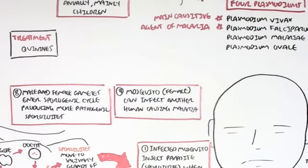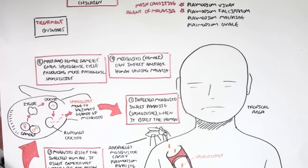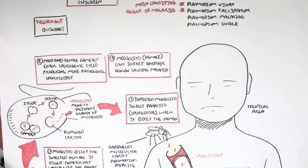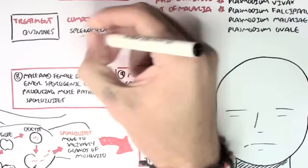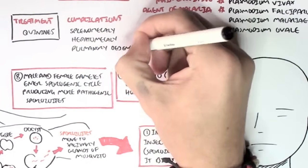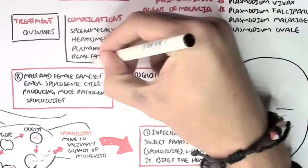So, how would you treat malaria? Well, you treat it with a group of drugs known as quinines. The complications that can arise with malaria include splenomegaly, enlargement of the spleen, hepatomegaly, enlargement of the liver, pulmonary edema, renal failure, jaundice, as well as high fever.